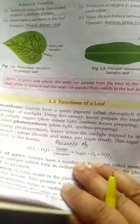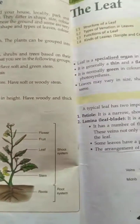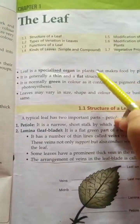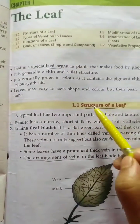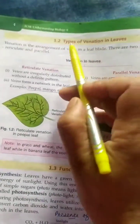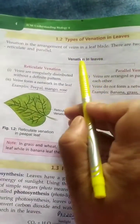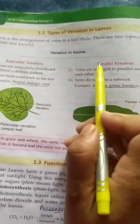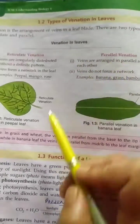Good morning students. Welcome to the next video of chapter number one. In the last video we studied about the structure of the leaf and venation in leaves. There are two types of venation: reticulate and parallel venation.